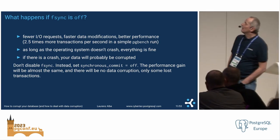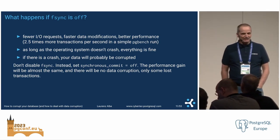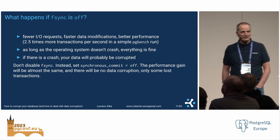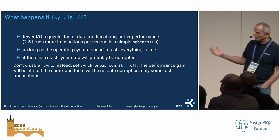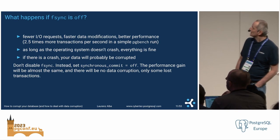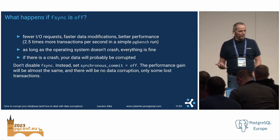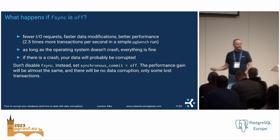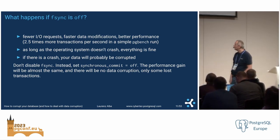If you need the performance benefit without the penalty, consider turning off synchronous_commit instead. That will only skip the WAL flushes during commit. So if you have an operating system crash, your database will come up and be consistent — you may have lost a couple of commits, but you're good.